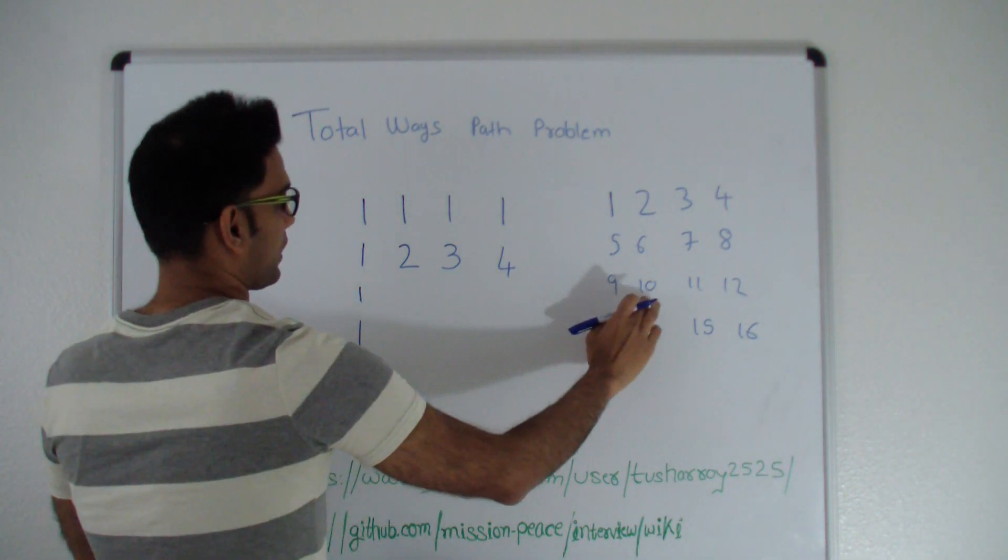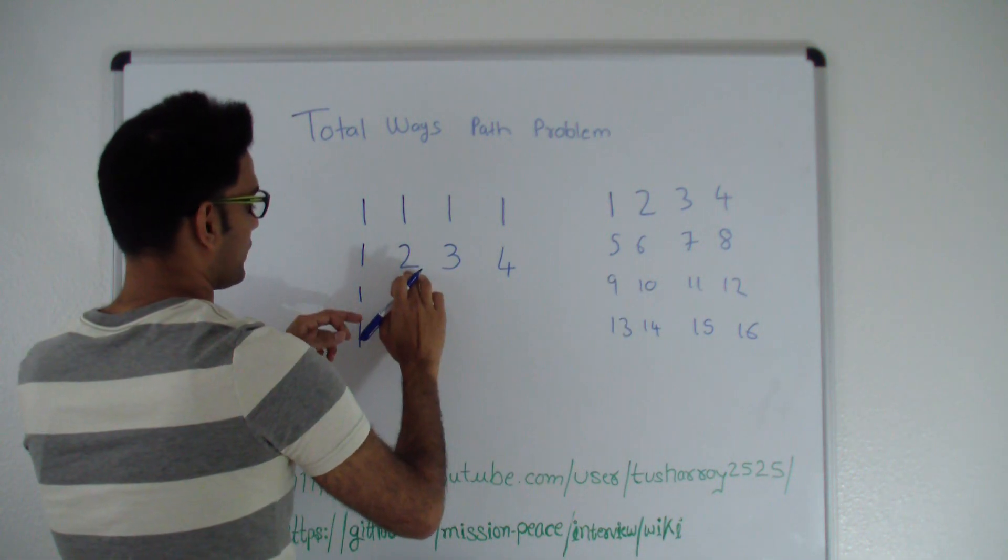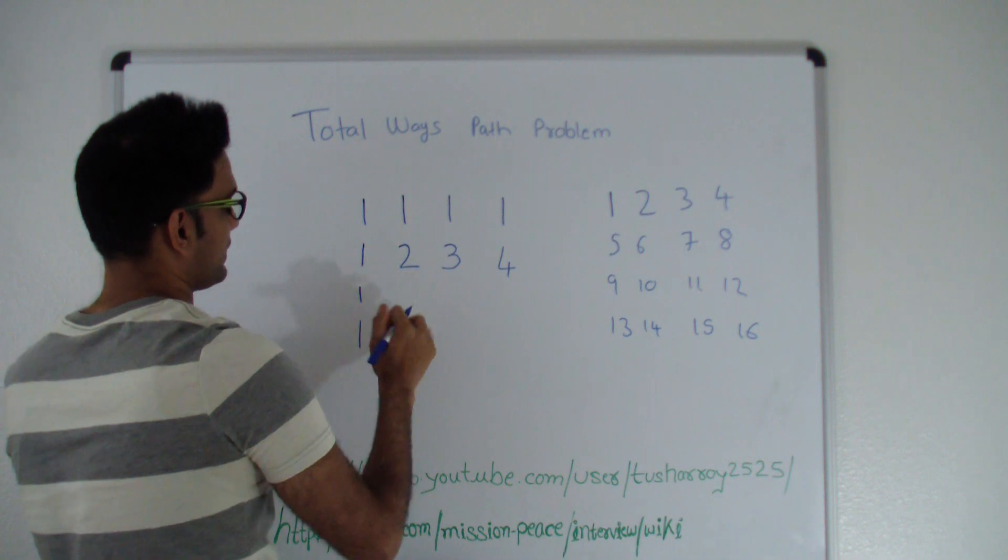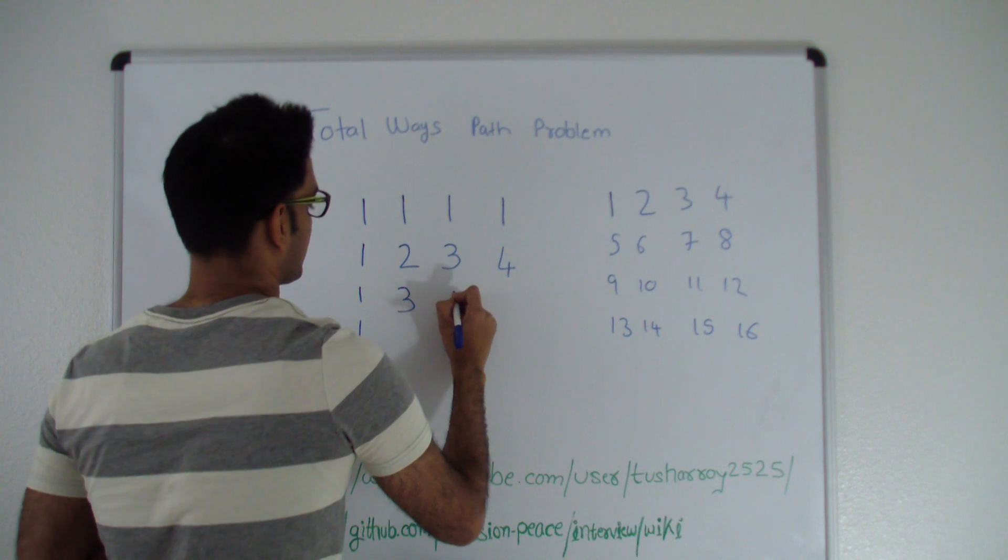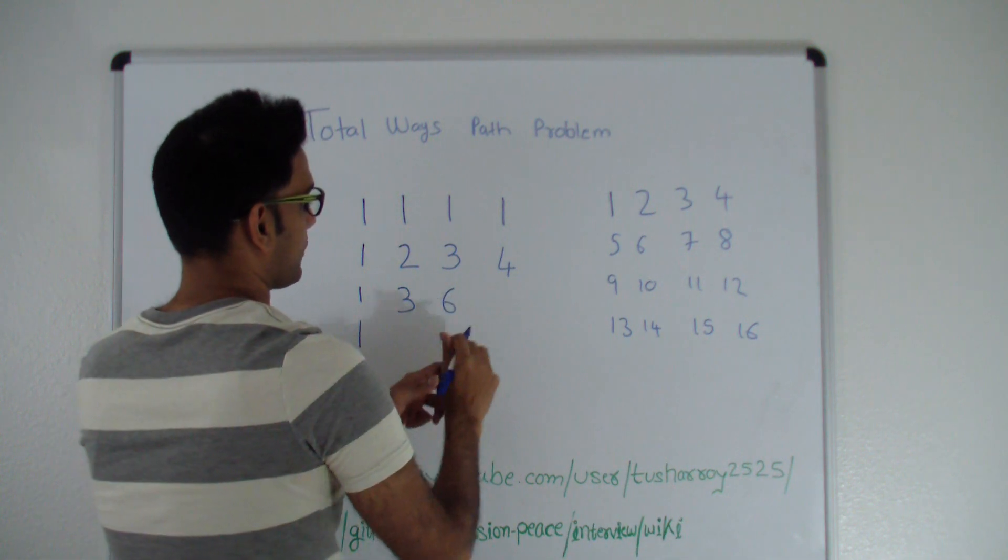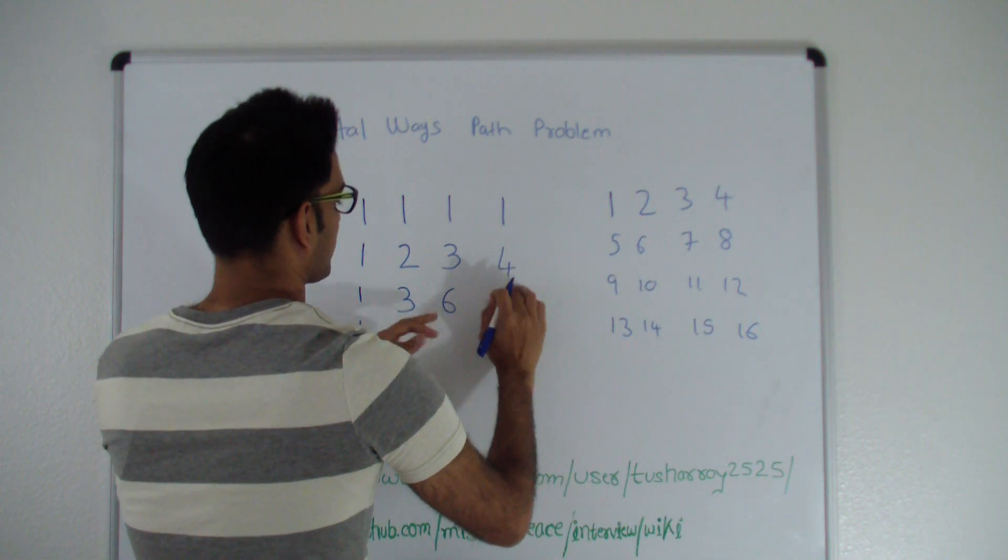Let's fill up this row. Total number of ways to reach ten is whatever you can reach from top plus whatever you can reach from left. So three. Total number of ways to reach eleven is three plus three, six. Total number of ways to reach twelve is six plus four, ten.